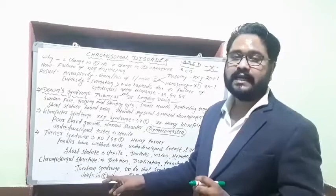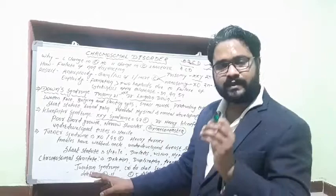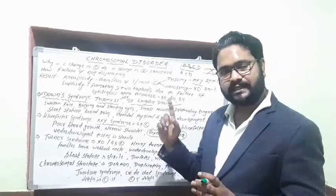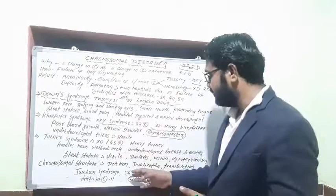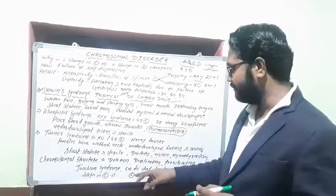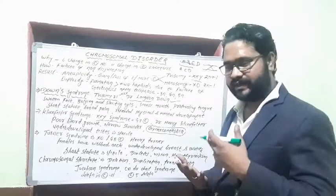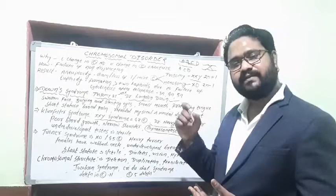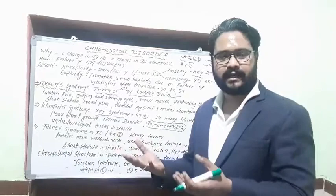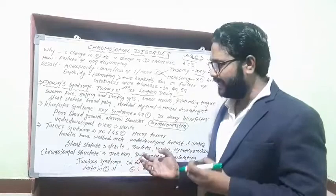Jacobson syndrome is also called the 11q syndrome because a small part of the q arm of chromosome number 11 is deleted. Another example is Cri-du-chat syndrome, caused by deletion of part of the fifth chromosome. A unique feature of Cri-du-chat syndrome is that affected children cry with such a shrill voice that it is difficult to distinguish whether a human child or a cat is crying — hence the name 'cry-du-chat' syndrome.